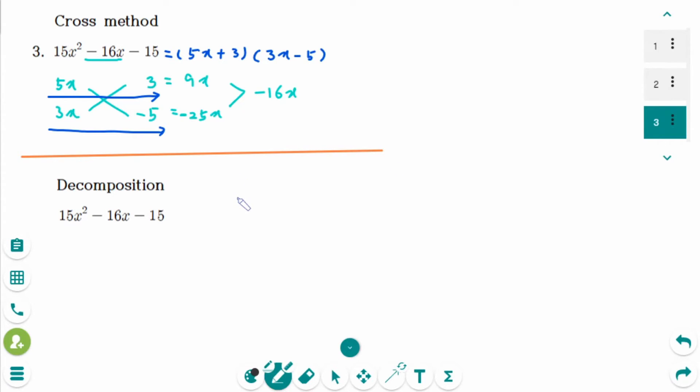The second method is decomposition. We are looking for two numbers that have a sum of minus 16 and a product of minus 225, which is 15 times minus 15.